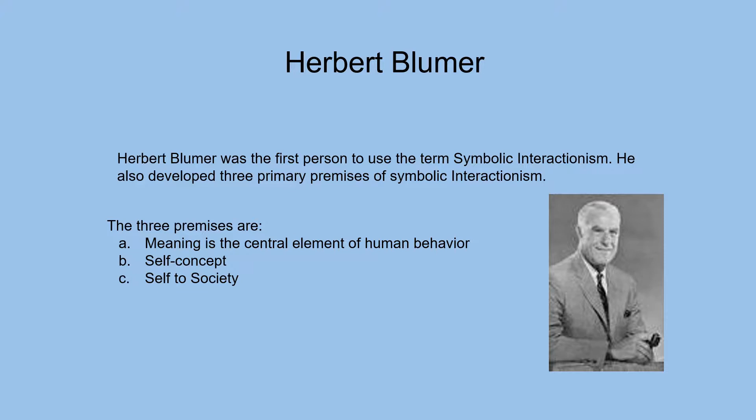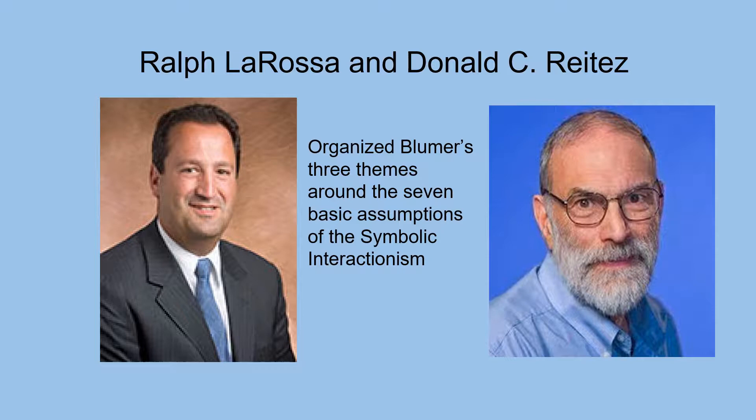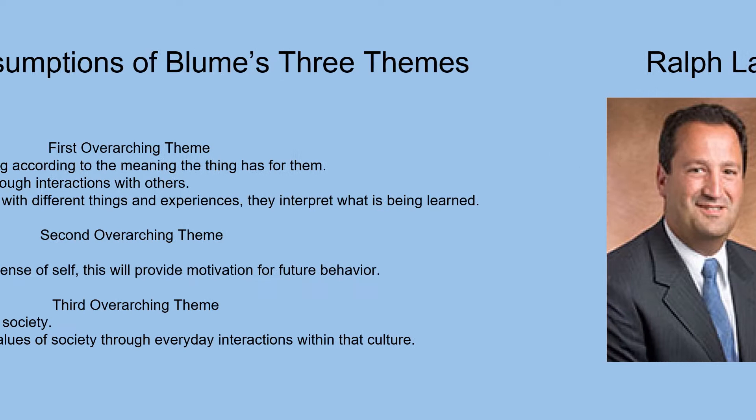The three premises are: A, meaning is a central element of human behavior; B, self-concept; and C, self to society. Ralph LaRosa and Donald C. Reitzes organized Blumer's three themes around seven basic assumptions of symbolic interactionism.